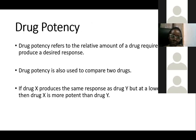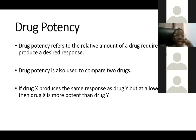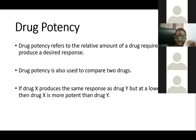Drug potency refers to the relative amount of the drug required to produce a desired response. It is used to compare two drugs. For example, if one drug requires two milligrams and another requires five milligrams to produce the same effect, the first drug is more potent. If a drug produces the same response at a lower dose, that drug is considered more potent.